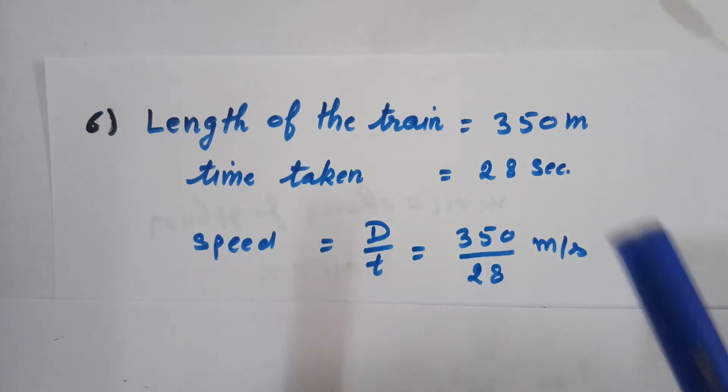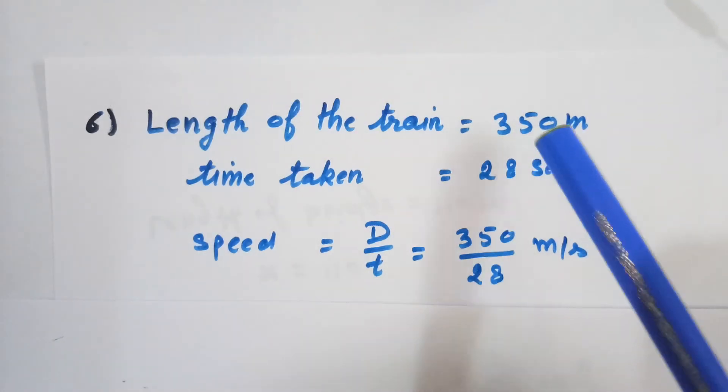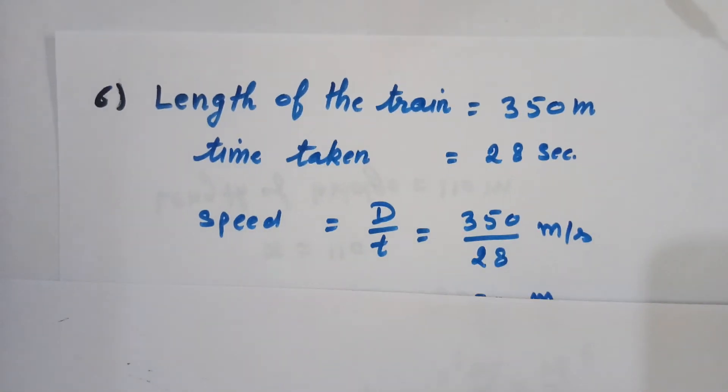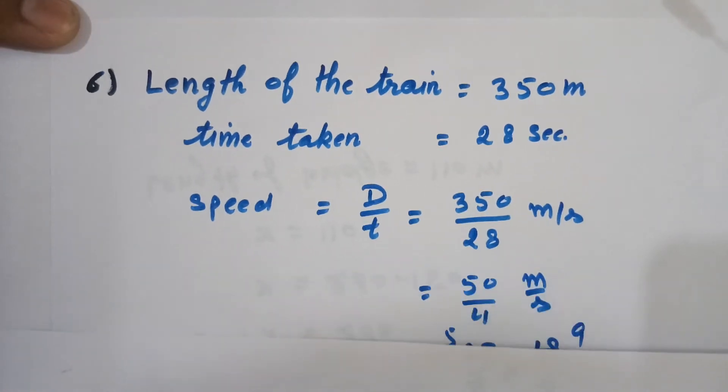Because speed equals distance upon time, distance is 350 meters and time is 28 seconds, so this is 350 over 28 meters per second. The speed is always calculated in kilometers per hour.